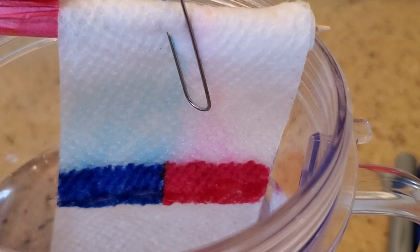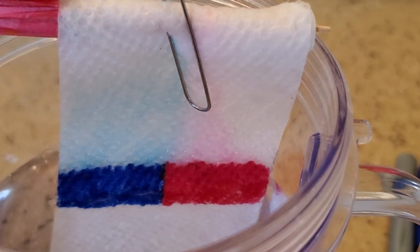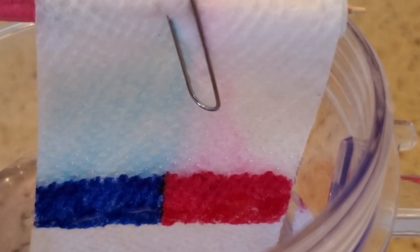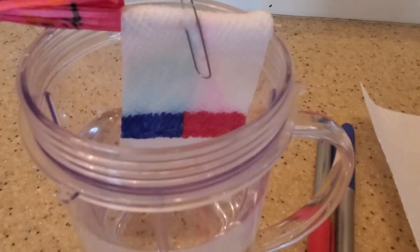And you can see how the blue is getting lighter and the red is getting lighter because the color is going up the paper towel with the water. Let's take it out and we can look at it more. Okay, let me zoom you in a little bit so you can see it better.